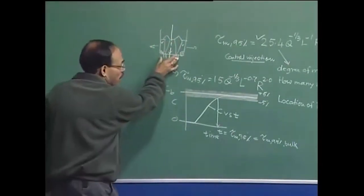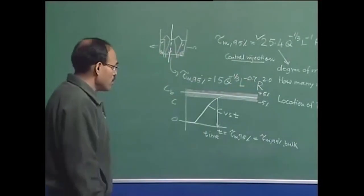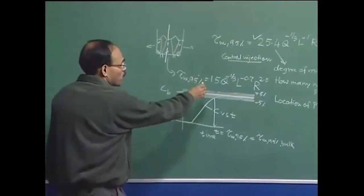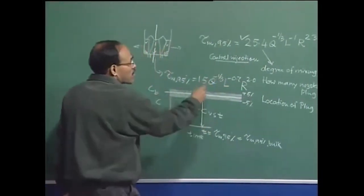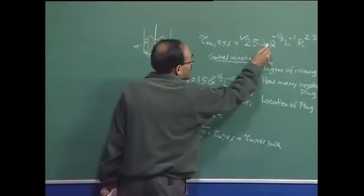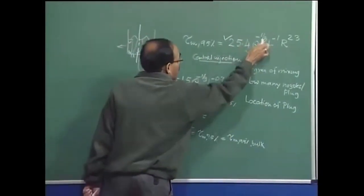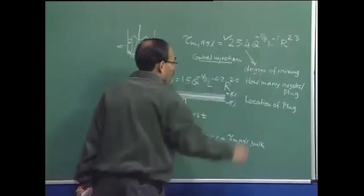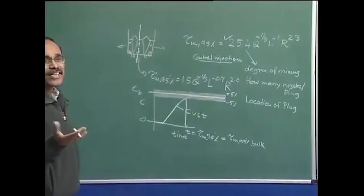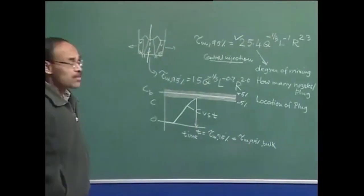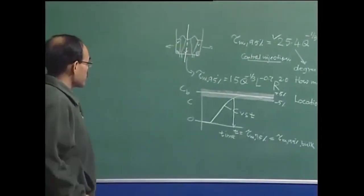For dual porous plugs, the correlation is substantially different, although the exponents on Q, L, and R are similar in nature. These are negative exponents on R, which are consistent with the theory of fluid flow in the ladle. The fitted constant shown corresponds to bulk mixing time for central gas injection with a single porous plug located at the geometrical centerline of the system.